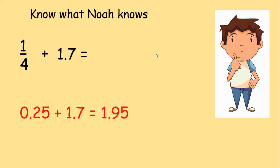Brilliant! We know that one quarter is the same as 0.25. I could add 0.25 to 1.7. This makes my calculation easier as I am adding two decimal numbers. My answer would be 1.95.